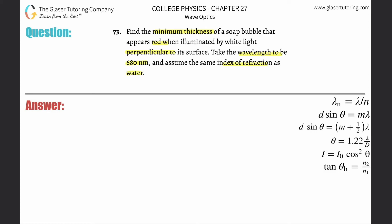Please review number 71, which talked in detail about thin film interference and how to think through it. Now we're going to run through the formulas. We know that the constructive interference formula for thin film interference is: 2 multiplied by the thickness of the film equals the wavelength in the medium divided by 2, or 3/2, or 5/2, and so on.